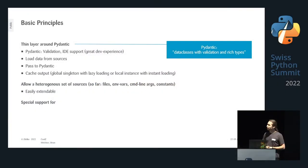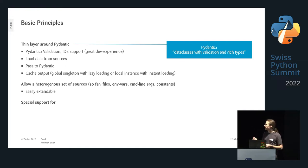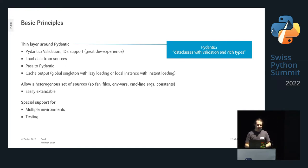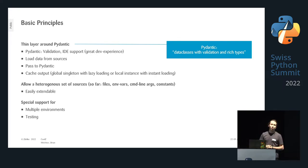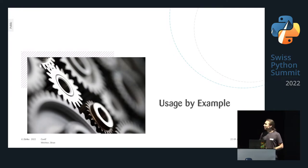It allows for a heterogeneous set of sources — environment variables, command line arguments, constants, and so on — and it's easily extendable. For example, if you have keys in Azure Key Vault, just write an extension and load them from there. There's also special support for multiple environments and testing, because we've seen how important testing is.